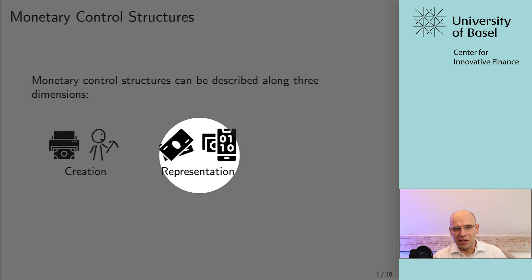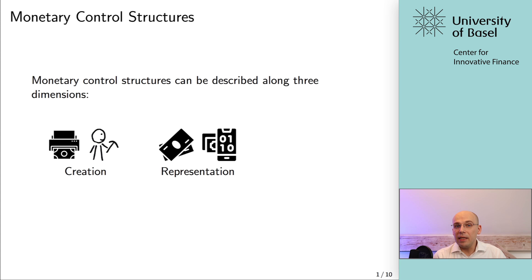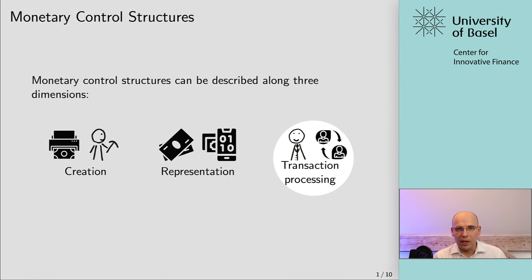The second dimension is representation — quite straightforward. It's the question of whether something is physical or virtual. Physical means it is attached to an actual object, while virtual means it is completely detached from anything physical — essentially just a book entry in a database. The third dimension is transaction processing, which can be centralized or decentralized. It is essentially the question of whether you need permission from a centralized intermediary in order to transfer your monetary unit.